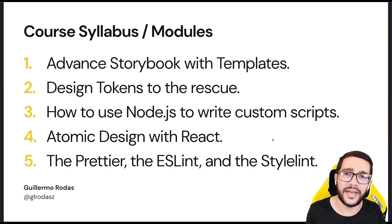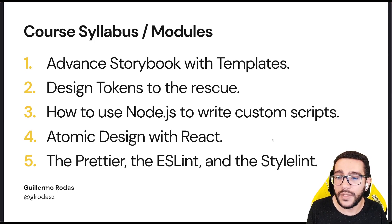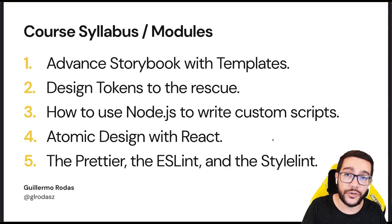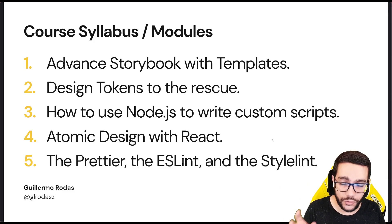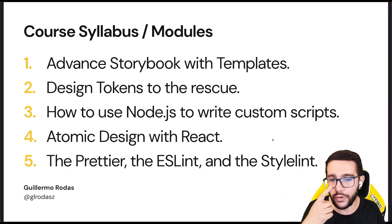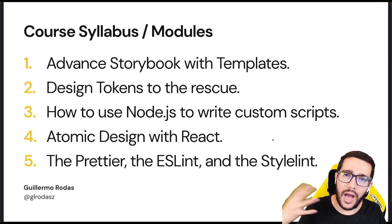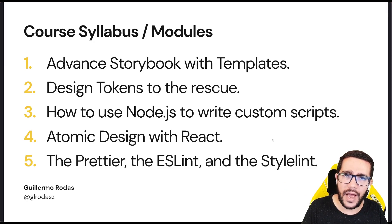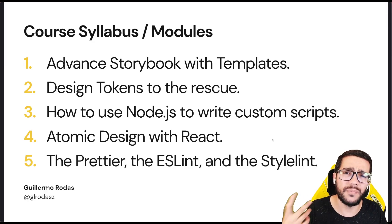This course is composed of 10 modules, and each module is made of multiple videos — every video is a lesson. First, we will be doing a lot of advanced Storybook using templates, which is the new way to use Storybook since version 6. Then we are going to talk about something very important for design systems called design tokens. Later, we will use Node.js to write custom scripts — you don't need a lot of dependencies, you can do it yourself.